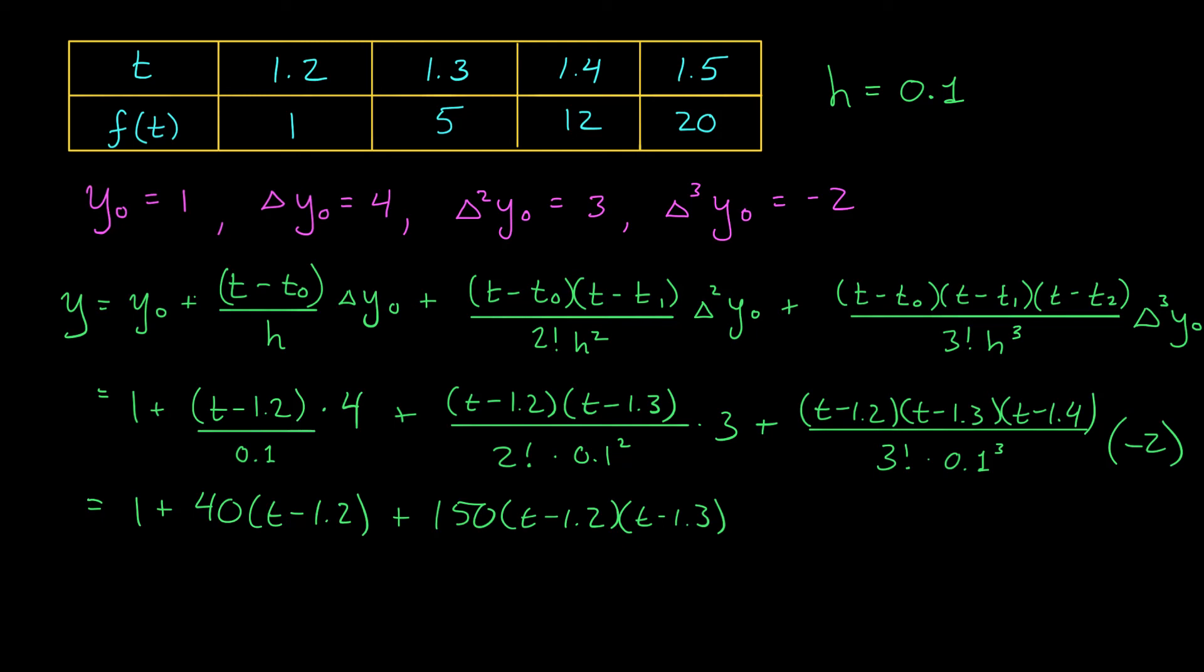And for my last term, what do I have? I have 0.1 cubed on the bottom, which is like multiplying by 1000, dividing by 6, and multiplying by 2.